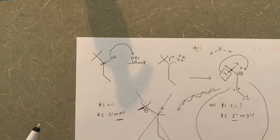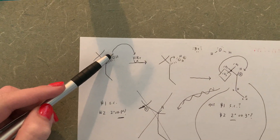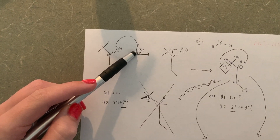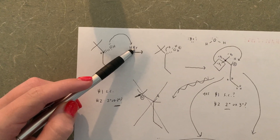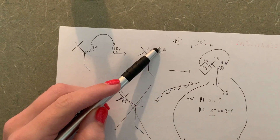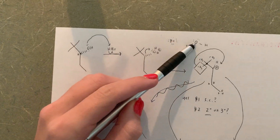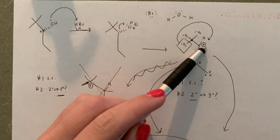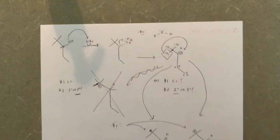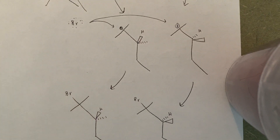To recap: every single problem starts with a lone pair giving to a hydrogen, that hydrogen giving electrons to the bromine, oxygen ending up with one lone pair, two hydrogens, and a positive charge, then water breaks off and we get our carbocation. That's where we start our evaluation list, and then the rest of the problem depends on what we answer for that list.